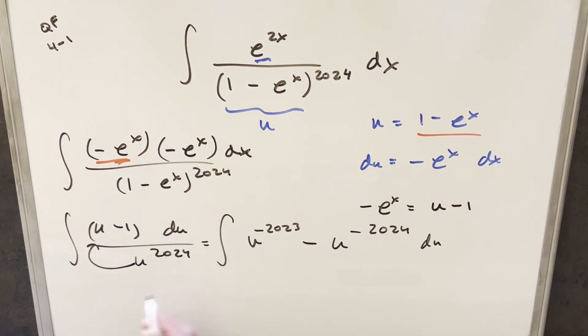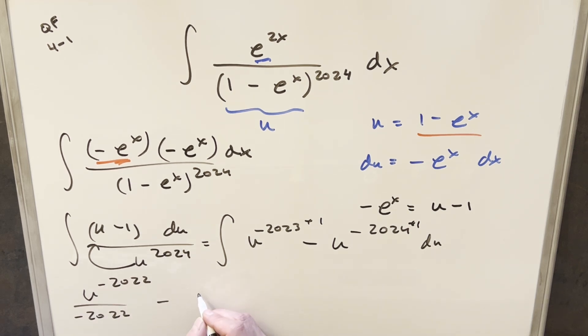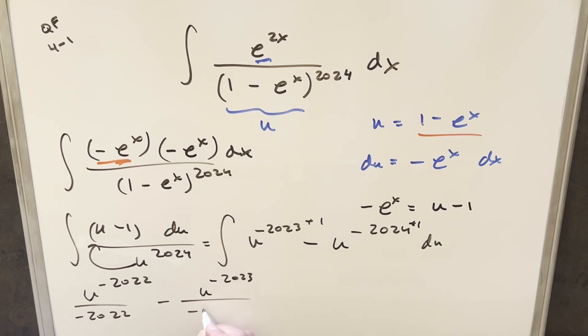But then for this, now it's just power rule, right? So we'll integrate this and add 1 on here, and add 1 on here. So what's going to happen is, we're going to have u to the minus 2022 over minus 2022. And then for the second one, we're going to have minus u to the minus 2023 over minus 2023.